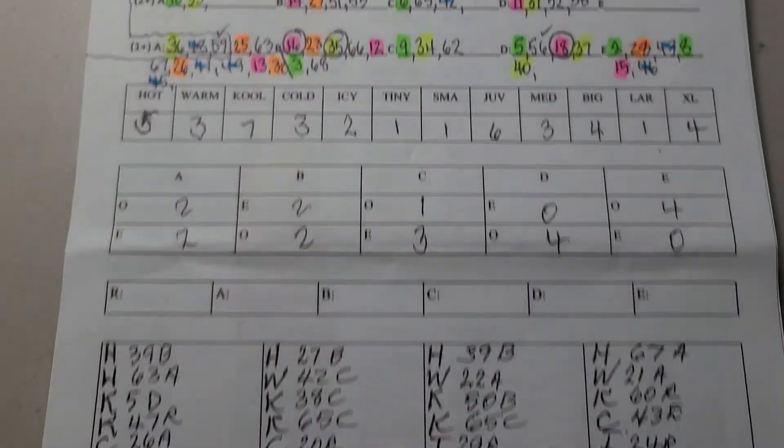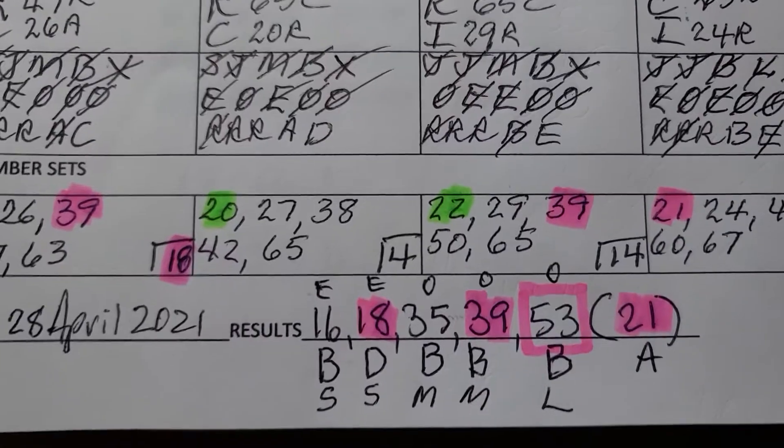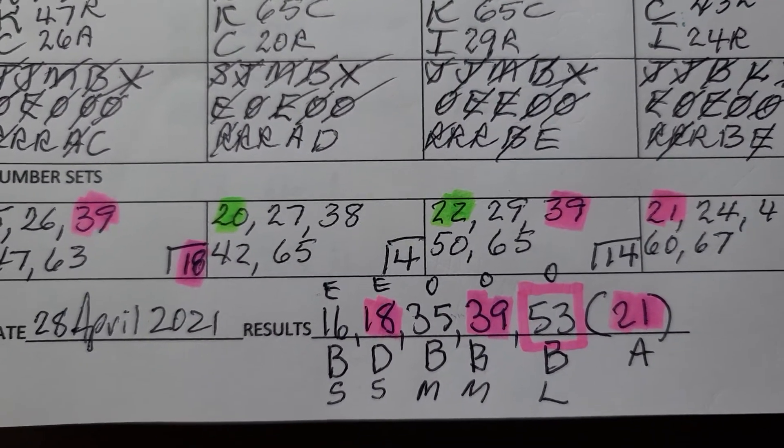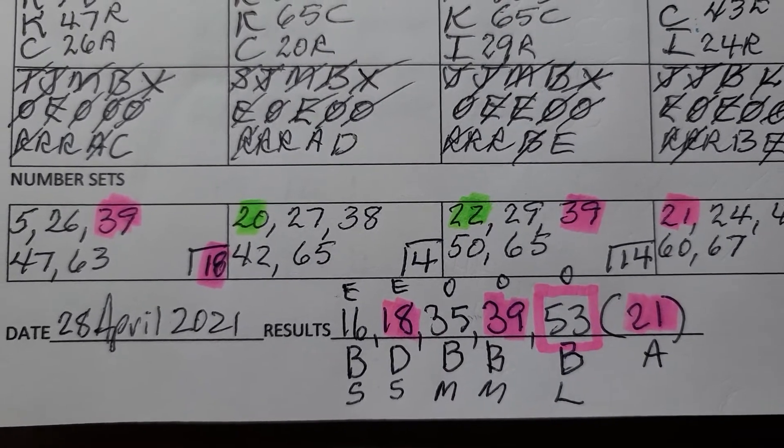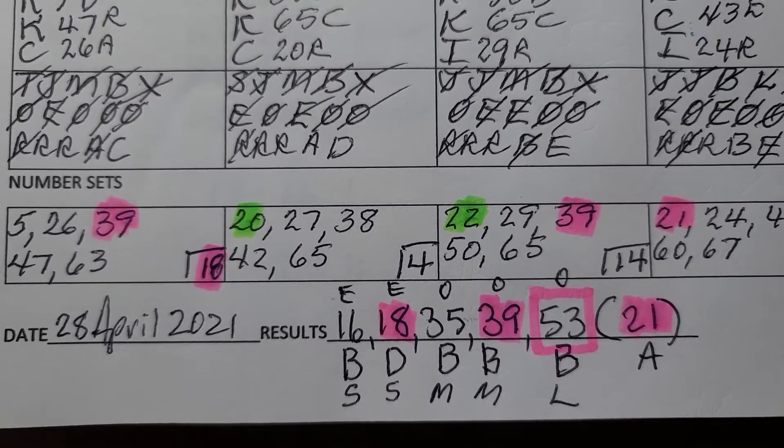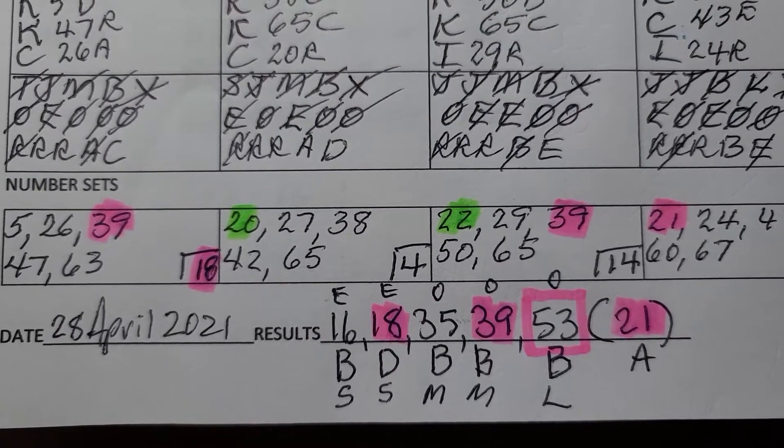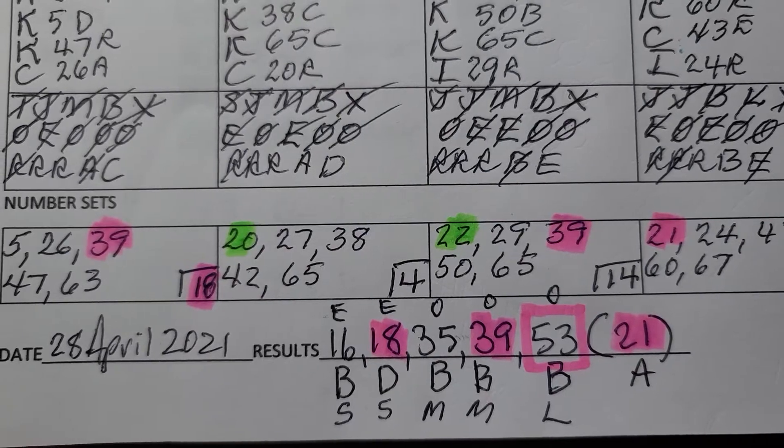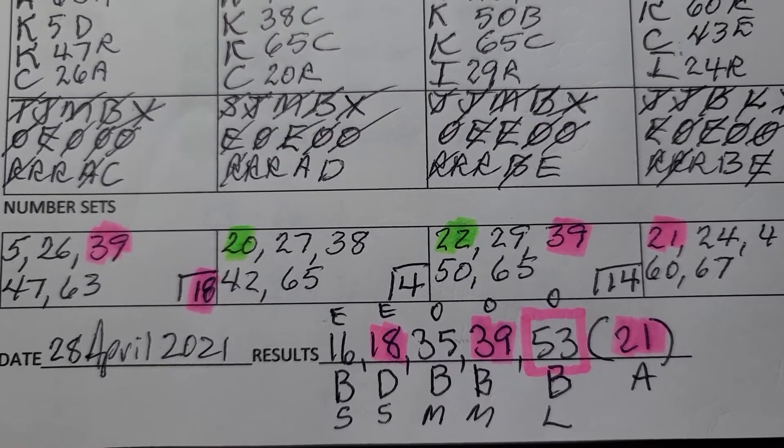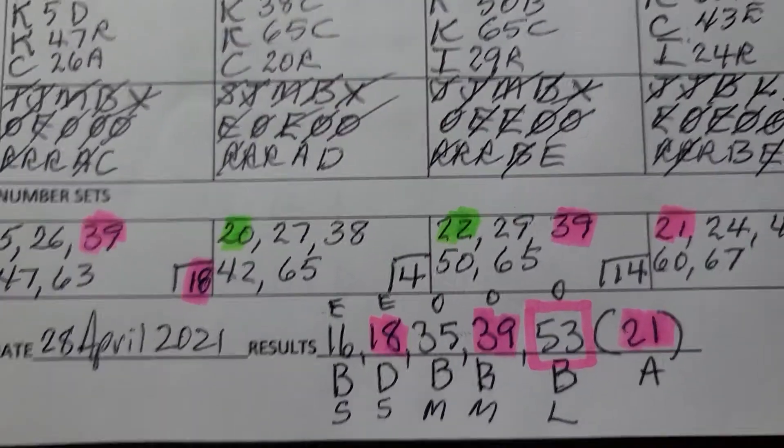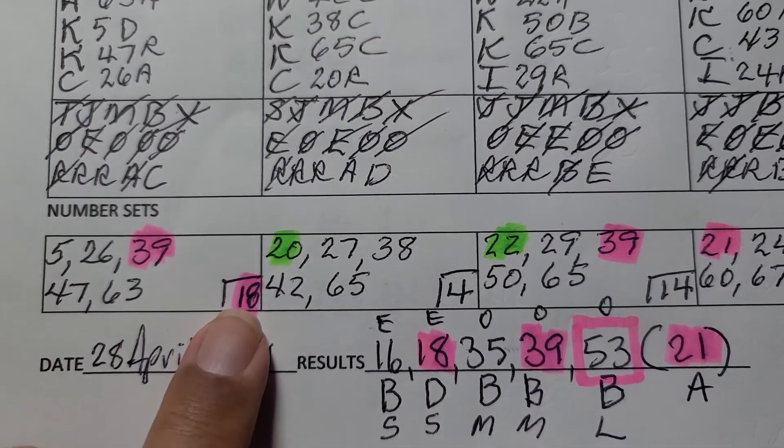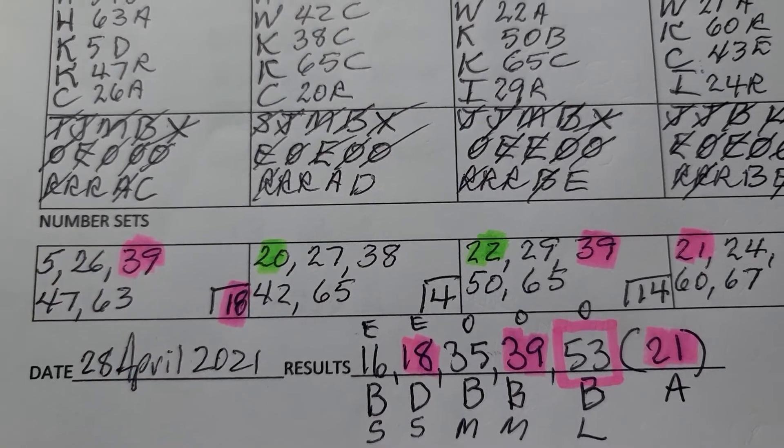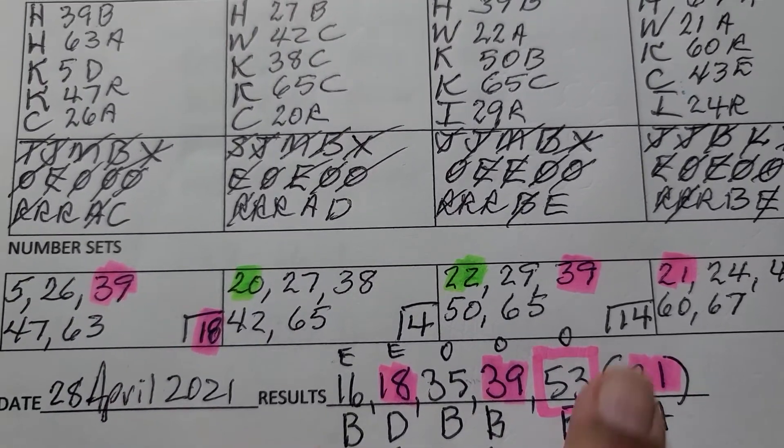Moving straight to the numbers, a lot of pinks, and the numbers that were drawn were 16, 18, 35, 39, 53 and the PowerBall was 21. On this matrix we were able to hit 18, which was out of position though, 18, 39, and 21. 21 was here and was out of position also.